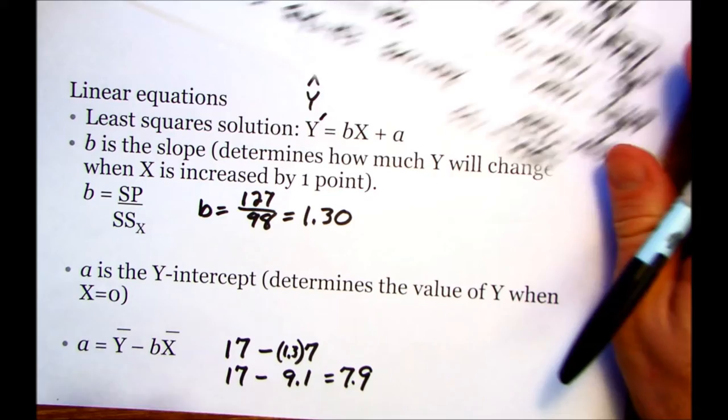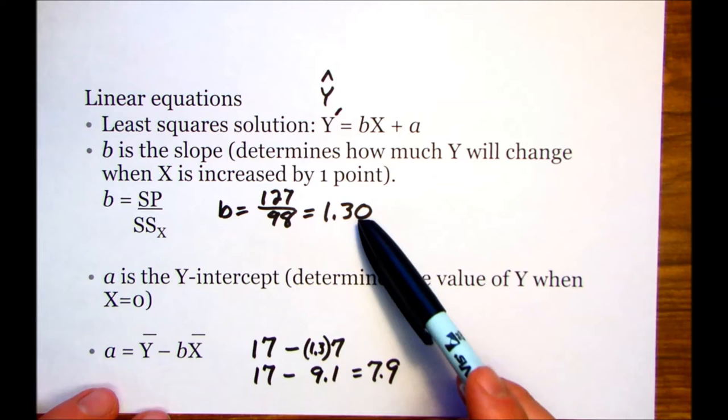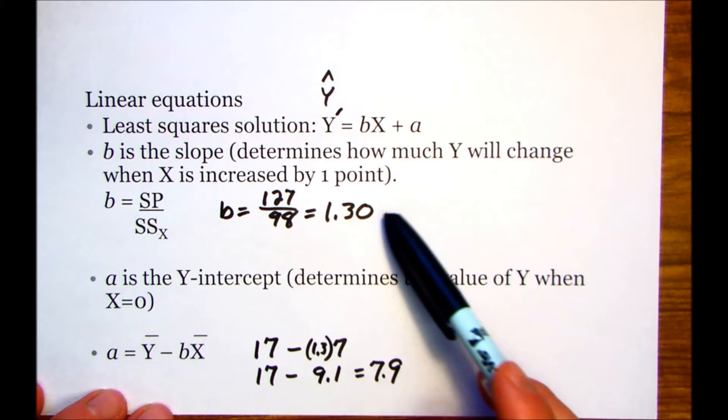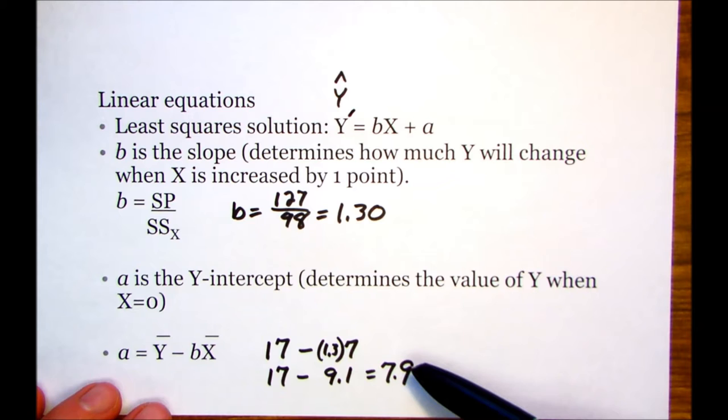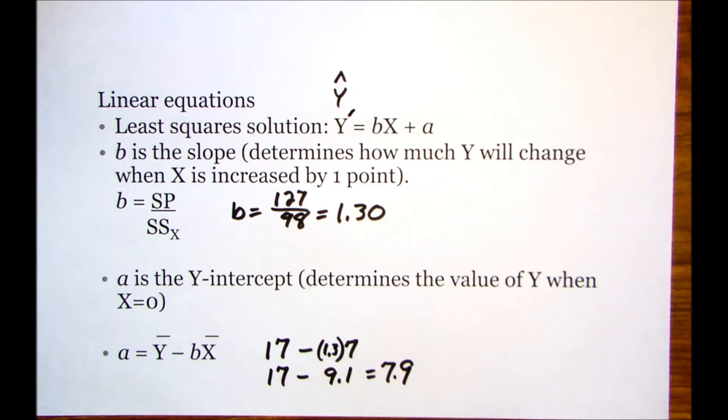So now we have our slope, which tells us how much y will change when x is increased by 1 point. So when we increase x by 1 point, the y changes to 1.3. And then we have the y-intercept. So when x is 0, y will be 7.9. So we've got each of those for our least-square solution.